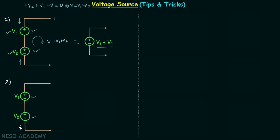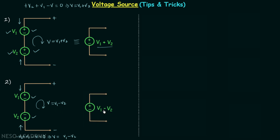Moving from bottom to top we have plus-minus, minus-plus — the polarity pattern is reversed, not the same. Applying KVL gives minus V2 plus V1 minus V equals zero, which gives V equals V1 minus V2. We replace the two sources with a single source providing V1 minus V2 with polarity plus-minus. The assumed polarity will be the polarity of the equivalent source.